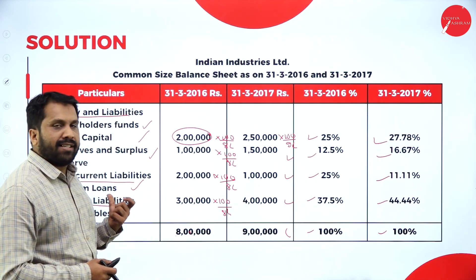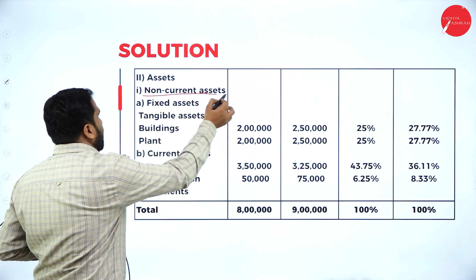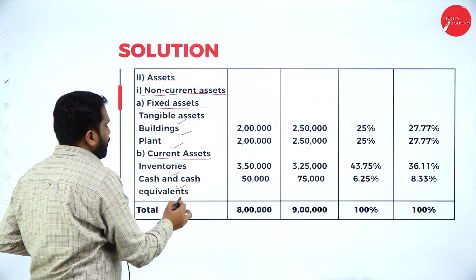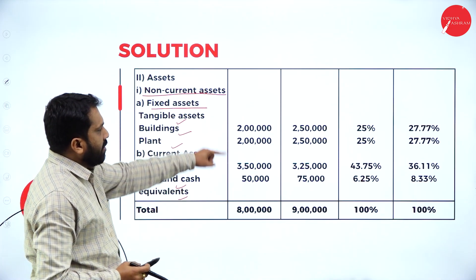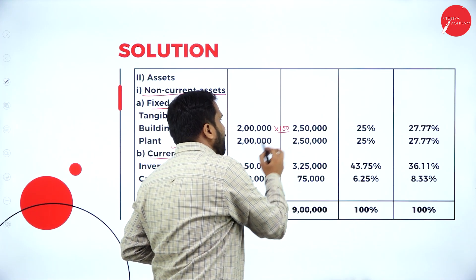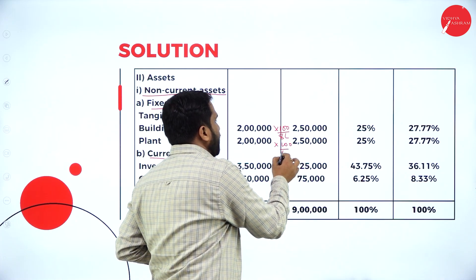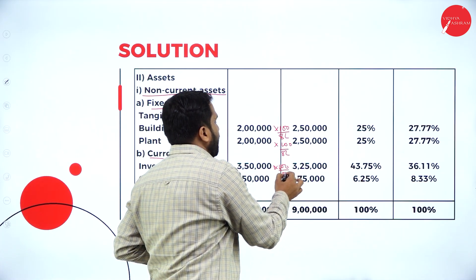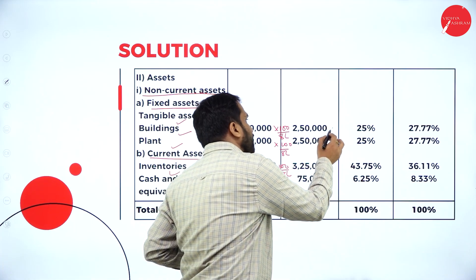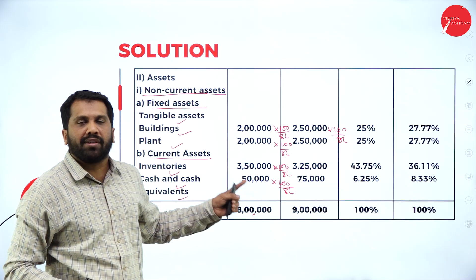This is your common size balance sheet for the liability side. Now come to your asset side. Non-current fixed assets like tangible — building, plant. Current asset — inventory, cash equivalents. Write all the assets and calculate the percentage. For 2016: each value into 100 divided by 8 lakh. For the second year: multiply with 100 divided by 9 lakh. This is what you are supposed to do in common size.